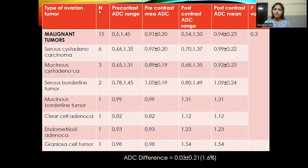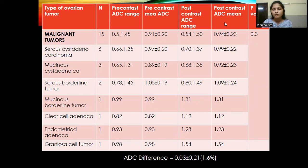For the 15 malignant tumors, the breakdown included 6 serous cystadenocarcinomas, 3 mucinous cystadenocarcinomas, 2 serous borderline tumors, and others including mucinous borderline tumor, clear cell adenocarcinoma, endometrioid adenocarcinoma, and a sex cord stromal tumor. The pre-contrast mean ADC for malignant tumors was 0.91 ± 0.20, and the post-contrast mean ADC was 0.94 ± 0.23. The difference in ADC was 0.03 ± 0.21, that is 1.6%, and the p-value was 0.3, which is again greater than 0.05 and not statistically significant.